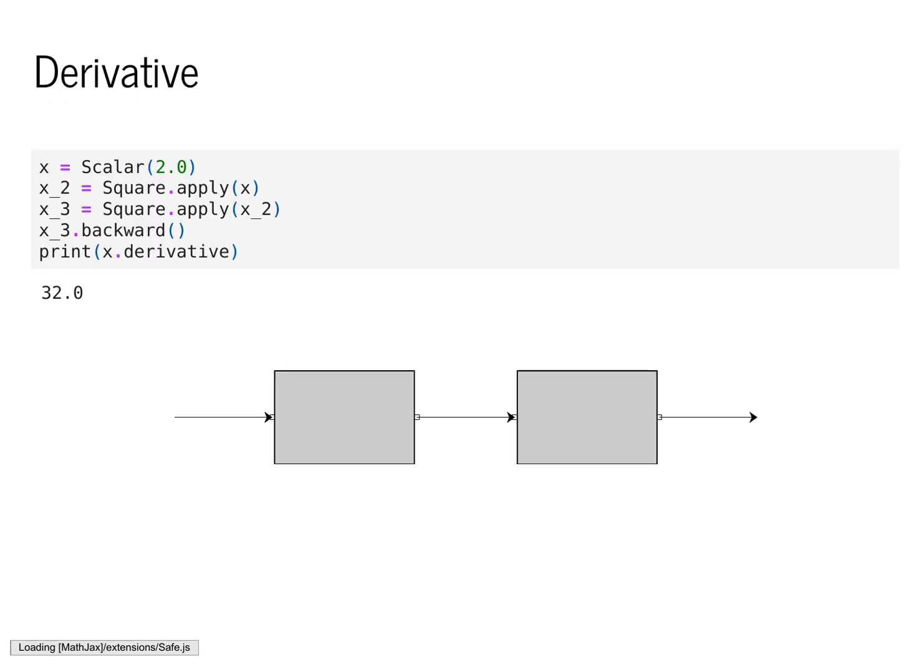Let's first go through a reminder of what the chain rule tells us about how derivatives work. Before we define backpropagation, let's define the API that a user will utilize. Let's assume that these two boxes represent a complex function which we'll call h. h takes an input argument x and returns a value. If we want to compute the derivative of h with respect to its input, we can apply several boxes and then call dot backward. Once we've called dot backward on the final value, we'll have access to x dot derivative.